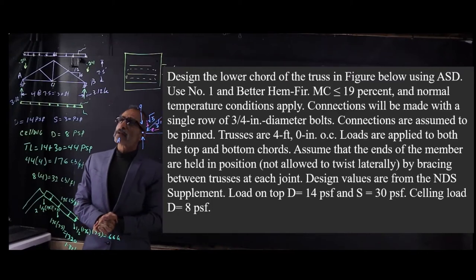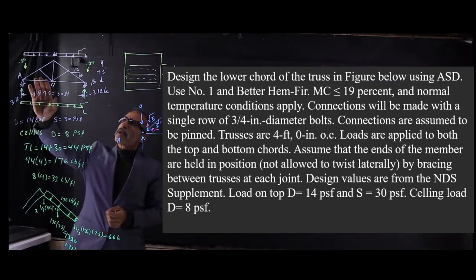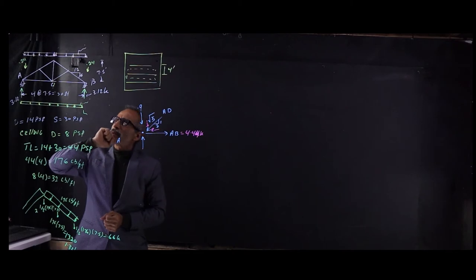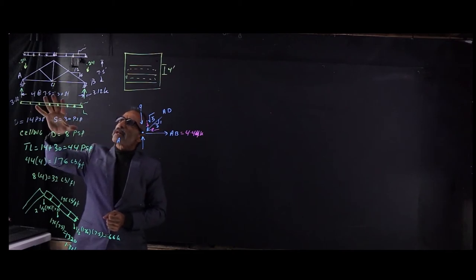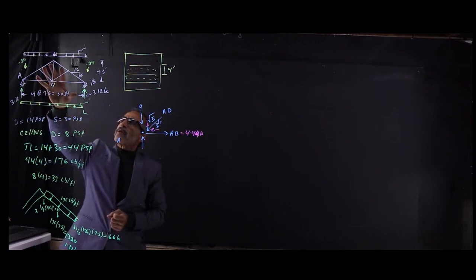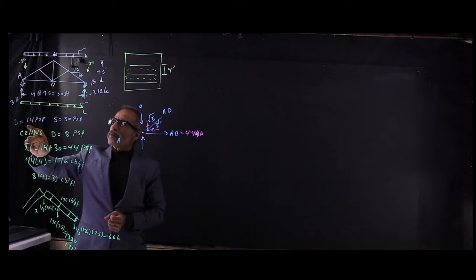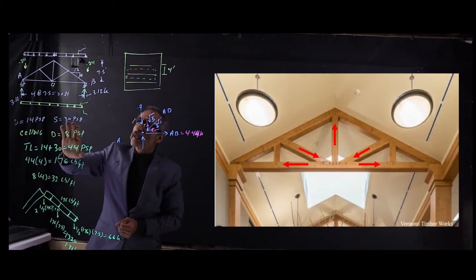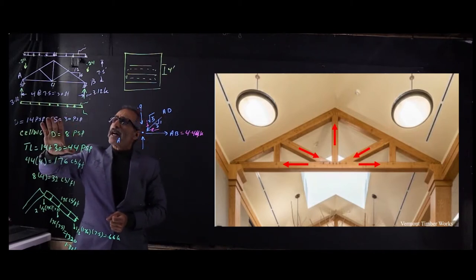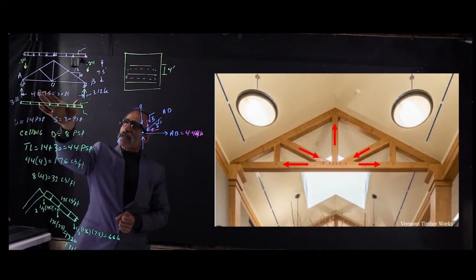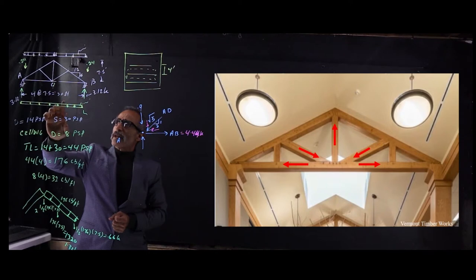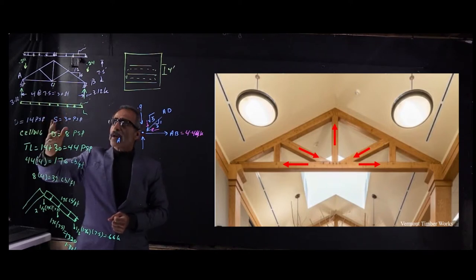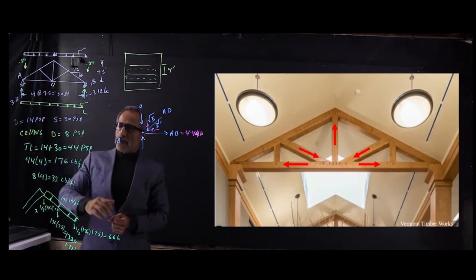Welcome back to another lecture. In this lecture we're going to design a king post truss. This truss has a roof load of dead load and snow load. The dead load is 14 pounds per square foot and the snow load is 30 pounds per square foot. At the same time it's going to support a ceiling load of 8 pounds per square foot.